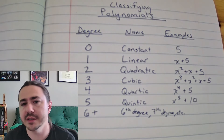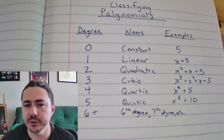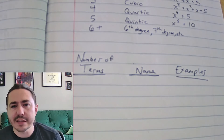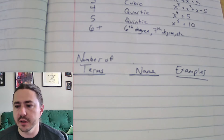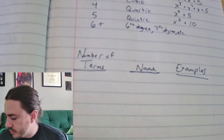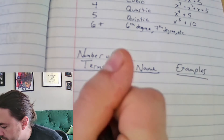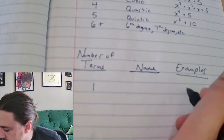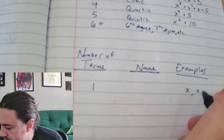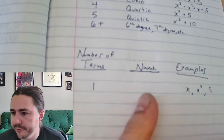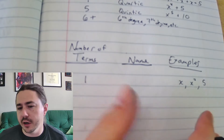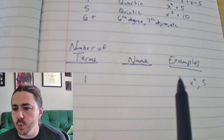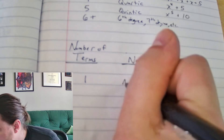The second way of classifying polynomials is based on the number of terms. If you have one term — it could be something like x, x to the seventh, or just a constant like 5 — the degree of the term is not going to affect this classification. As long as there's just one singular term, we call it a monomial.